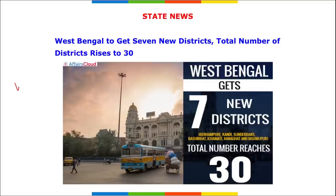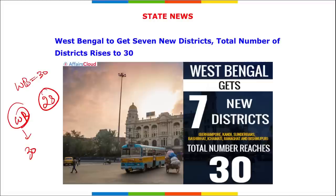Next news: West Bengal is to get seven new districts, bringing the total number of districts to 30 — up from the earlier 23. The Governor of West Bengal is La. Ganesan, who was given additional charge of West Bengal and also serves as the Governor of Manipur. He was appointed under Article 153, which allows a person to hold the office of Governor of two individual states.